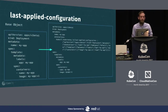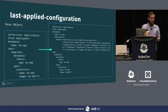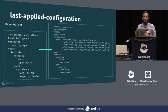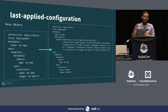As an example - with a pretty simple deployment as our base object - if we were to run kubectl apply on this, what would end up in the live object in the cluster is that it would inject the state you're pushing into the cluster into that special annotation, the last applied configuration, and then the rest of your object exists normally.